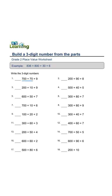700 plus 70 plus 9 equals 779. 200 plus 90 plus 8 equals 298.